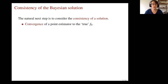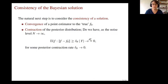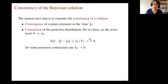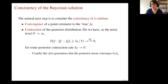After we have a solution, the natural question is: does it make sense? Is it a good solution? The natural first step is to consider convergence of the point estimators to the true F zero. But since I'm doing Bayes, I have the whole posterior distribution, so I want to consider something more — specifically, the contraction of the posterior distribution around the true unknown. If we can show this, then the convergence of a point estimator, such as the conditional mean, follows automatically.